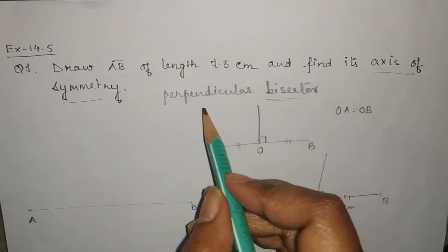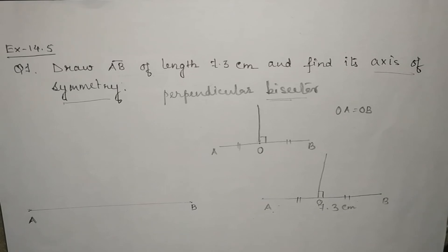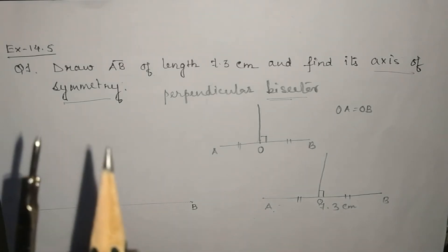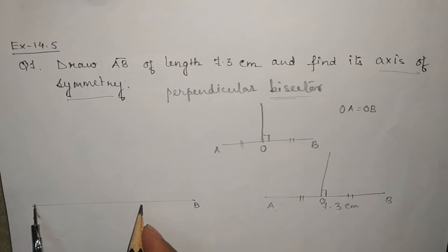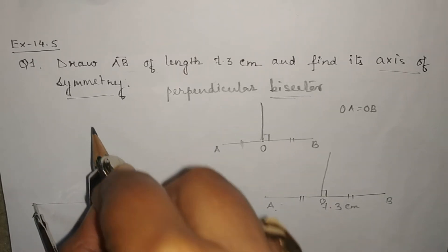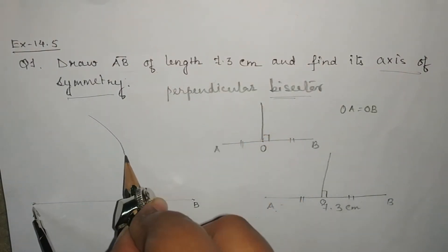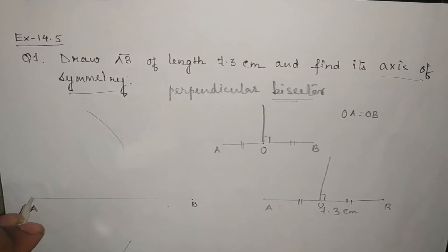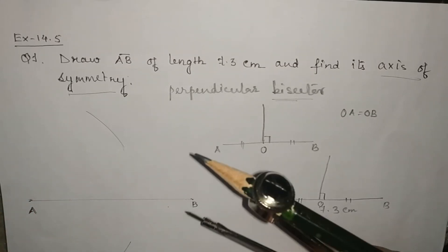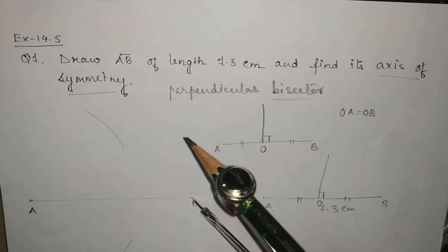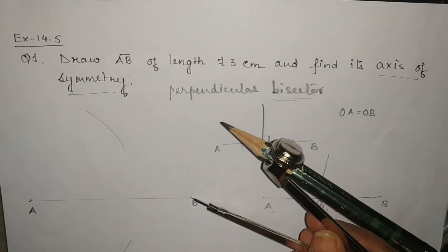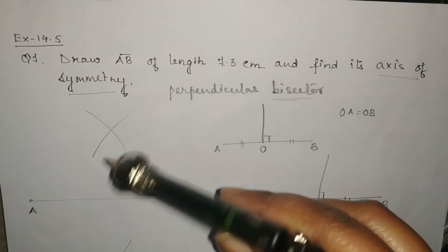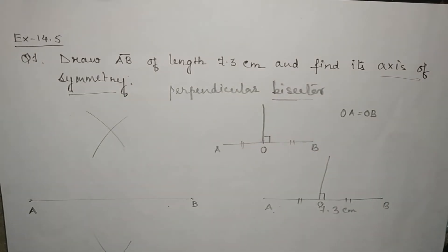Now we will have to draw a perpendicular bisector. For this we will place the needle of the compass at A point and we will take more than half and then we will draw an arc here and another arc at lower side. Now similarly we will place the needle at point B and with the same measurement we will draw an arc which will cut over here and down also. So now we will have two intersecting points.